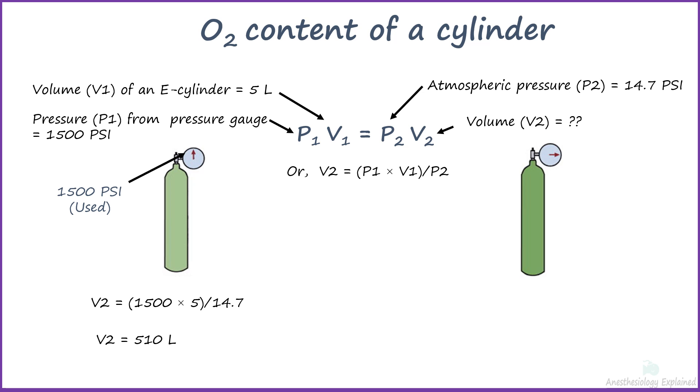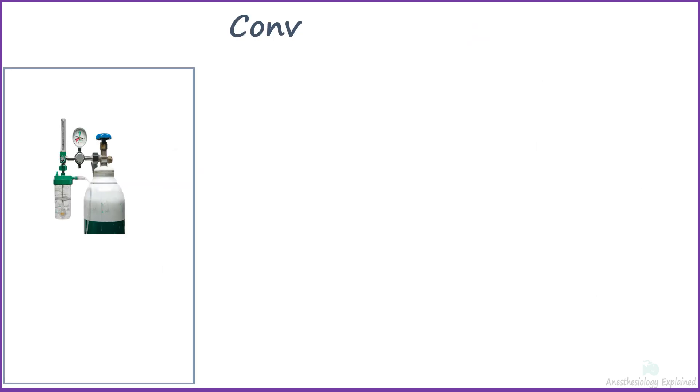There is a linear reduction of the oxygen volume as a full type E oxygen cylinder at a service pressure of 1900 to 2000 psi contains 660 to 690 liters of oxygen. In the earlier slide, we calculated 510 liters as the amount of oxygen left in the E-type cylinder with the pressure of 1500 psi.